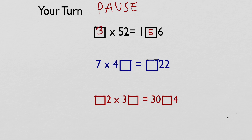Next: 7 times 40-something equals a three-digit number. The missing digit is in the units column, so 7 times what gives a number ending in 2? The only option is 7 × 6 = 42. So 6 goes in the box. Then 7 × 46 = 322, putting 3 in the answer box.